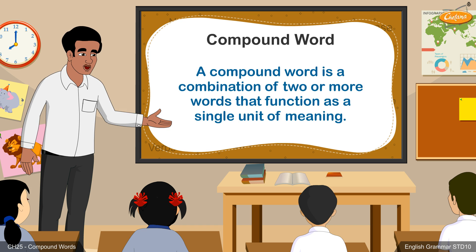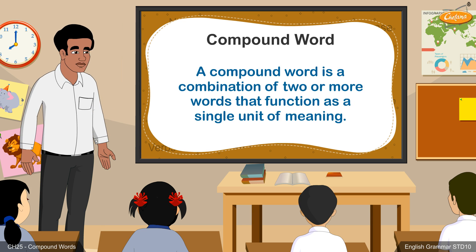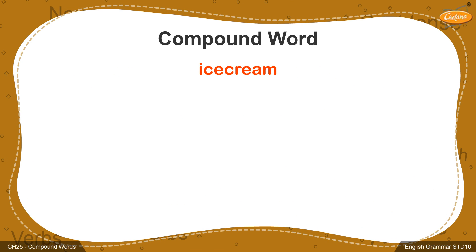A compound word is a combination of two or more words which have a single meaning. For example, ice cream.